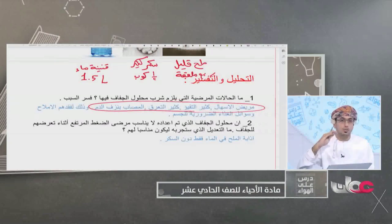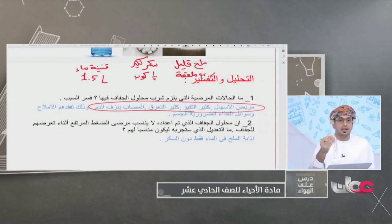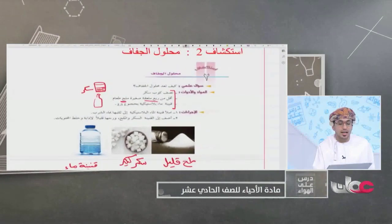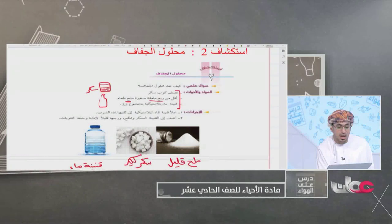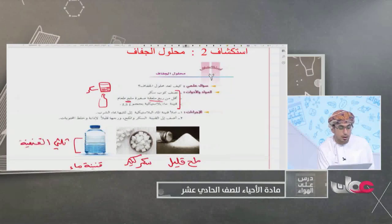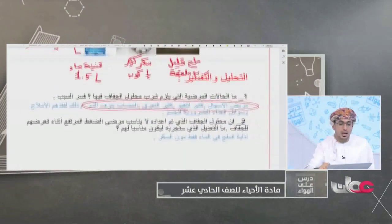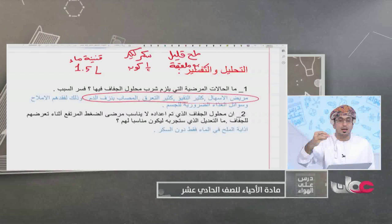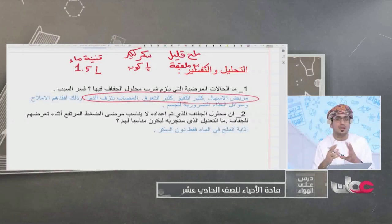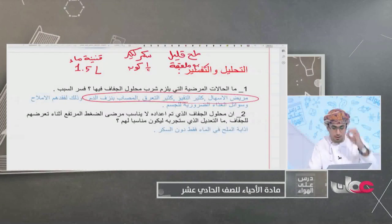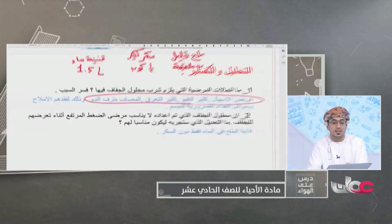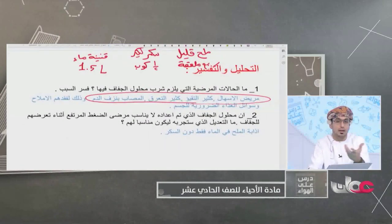يُفضَّل في عمل الاستكشاف أن تكون لكل مجموعة من الطلاب قنينة جاهزة. هذه التجربة لا تحتاج إلى أدوات معقدة، ويمكن استخدام قنينة ماء غير ممتلئة على الثلثين. المقادير ليست دقيقة تماماً: نصف كوب سكر، وأقل من ربع ملعقة ملح، وثلثا قنينة ماء أو أكثر قليلاً.